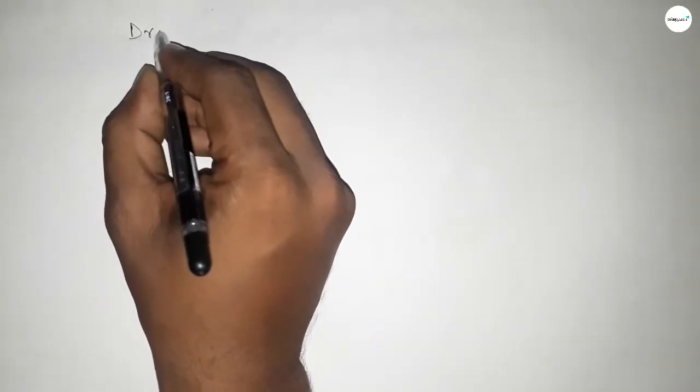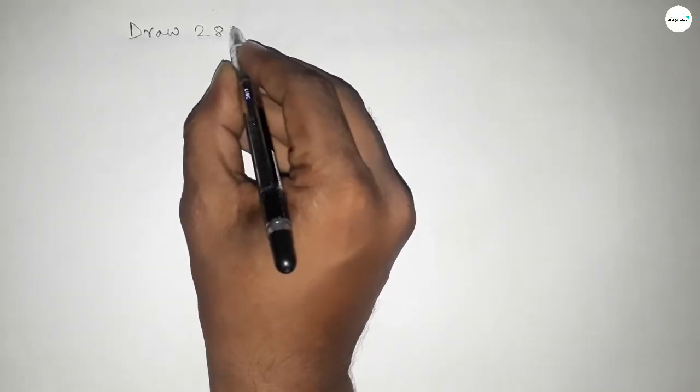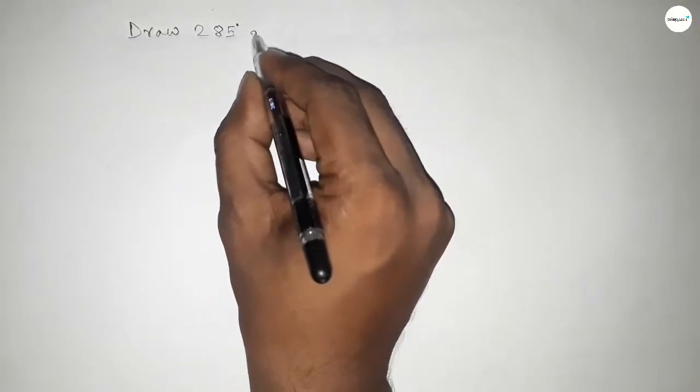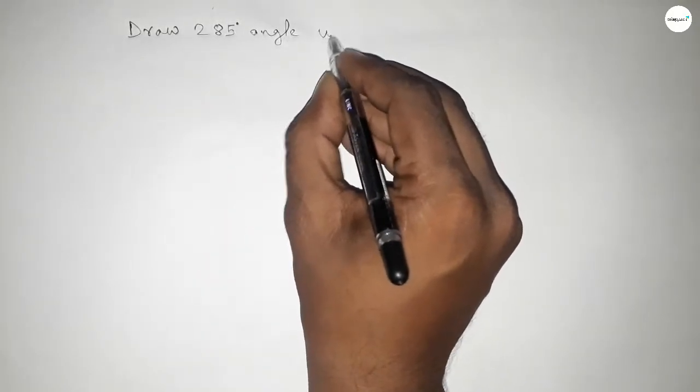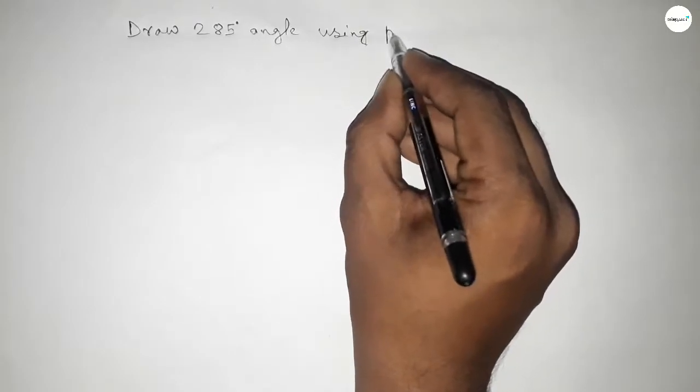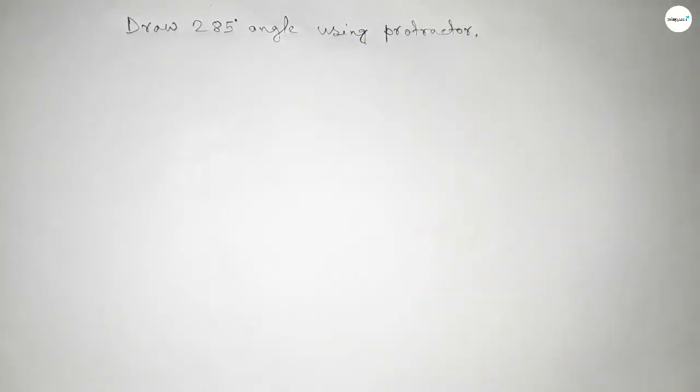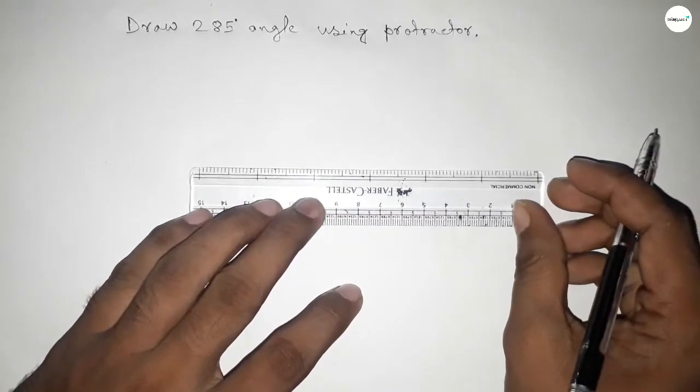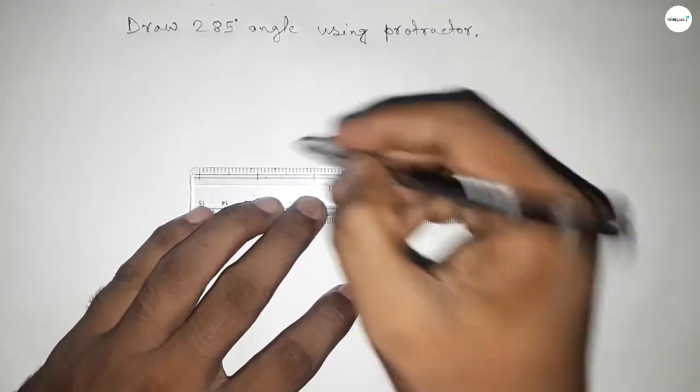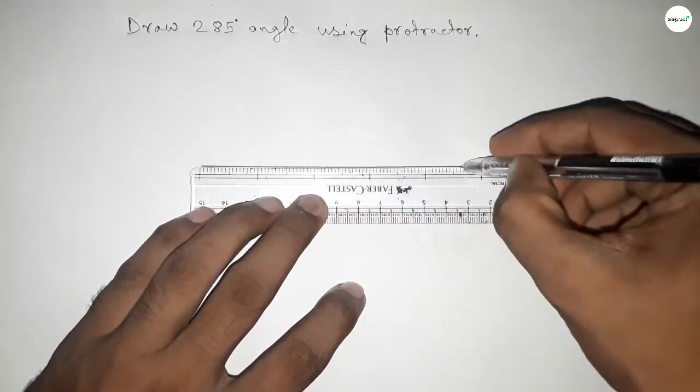Hi everyone, welcome to SSR Classes. Today in this video we have to draw a 285-degree angle using a protractor. So let's start the video. First of all, we have to draw a straight line of any length.